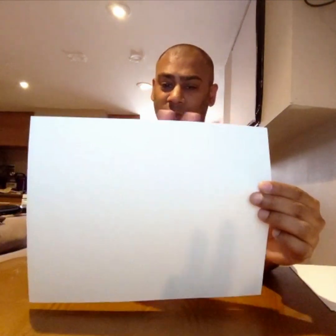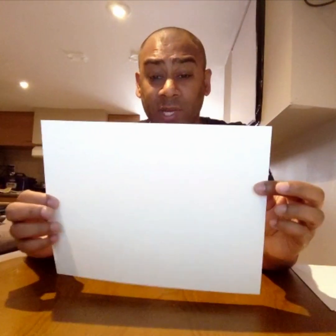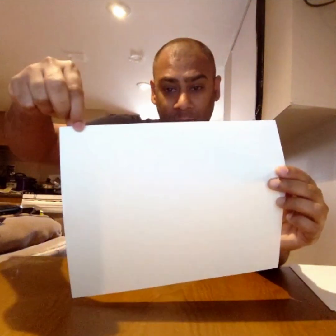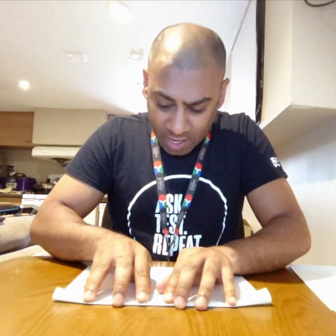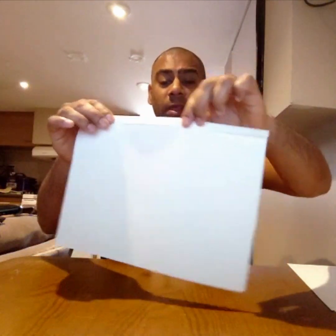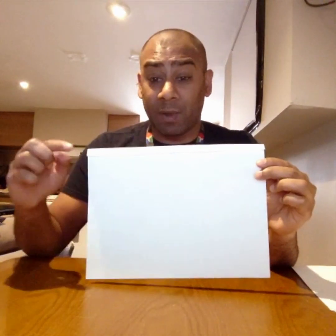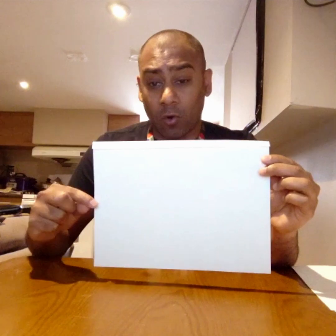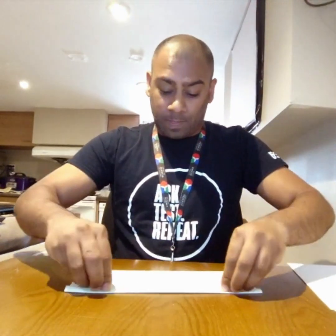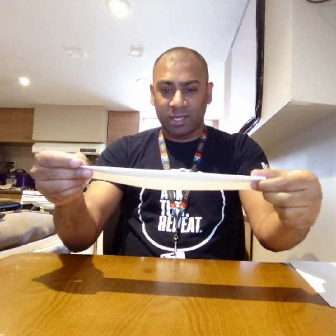We're going to start with it landscape style — that's wide across. Our first step is just a one centimeter fold right at the top. With any paper airplane, take your time; it's not about speed but getting it right. It's one centimeter, about the width of your pinky. The next few steps are exactly the same — you're going to keep folding down over and over again. You're not going to go all the way to the bottom; you're going to stop about three or four centimeters from the bottom. It doesn't look like much of a plane just yet.